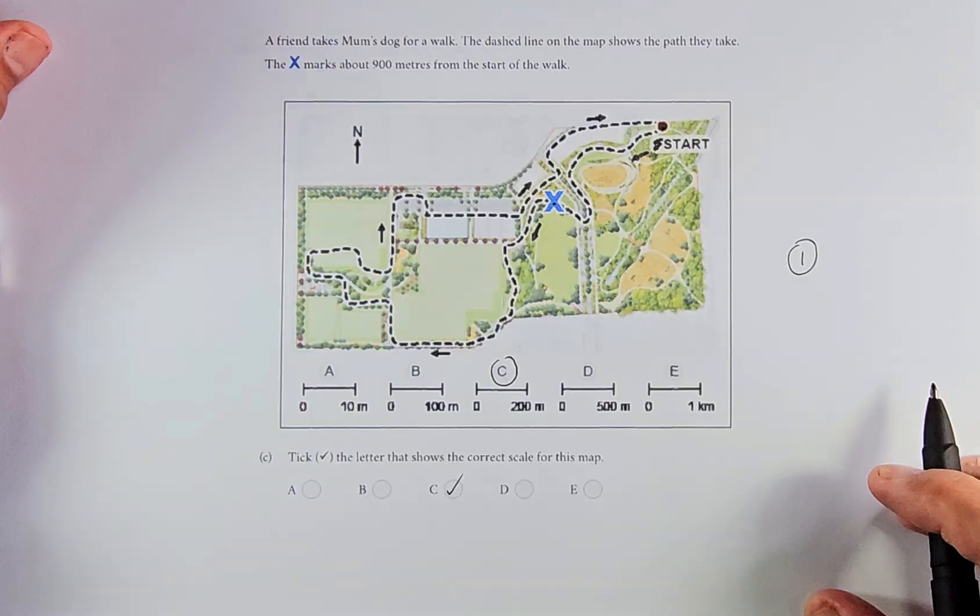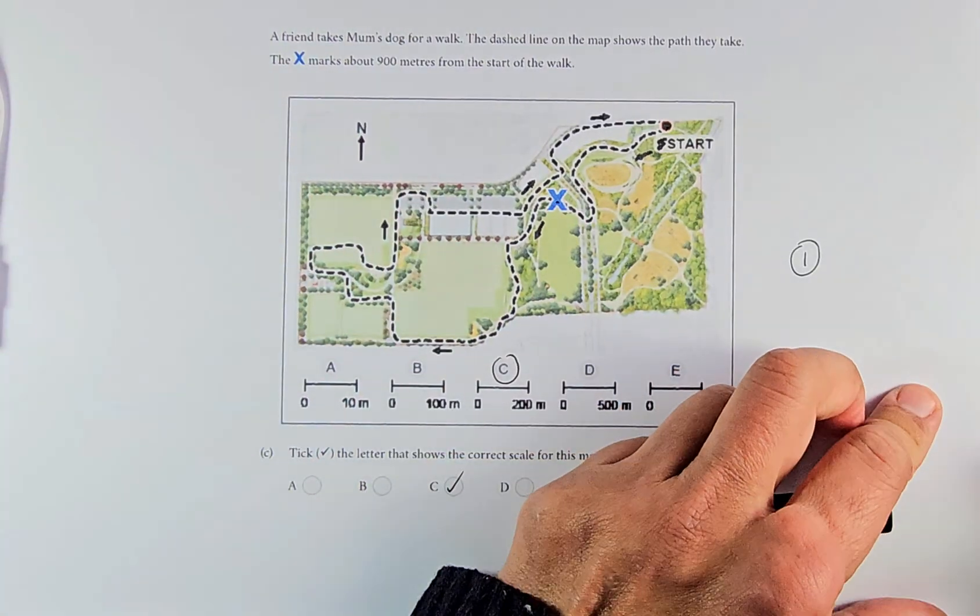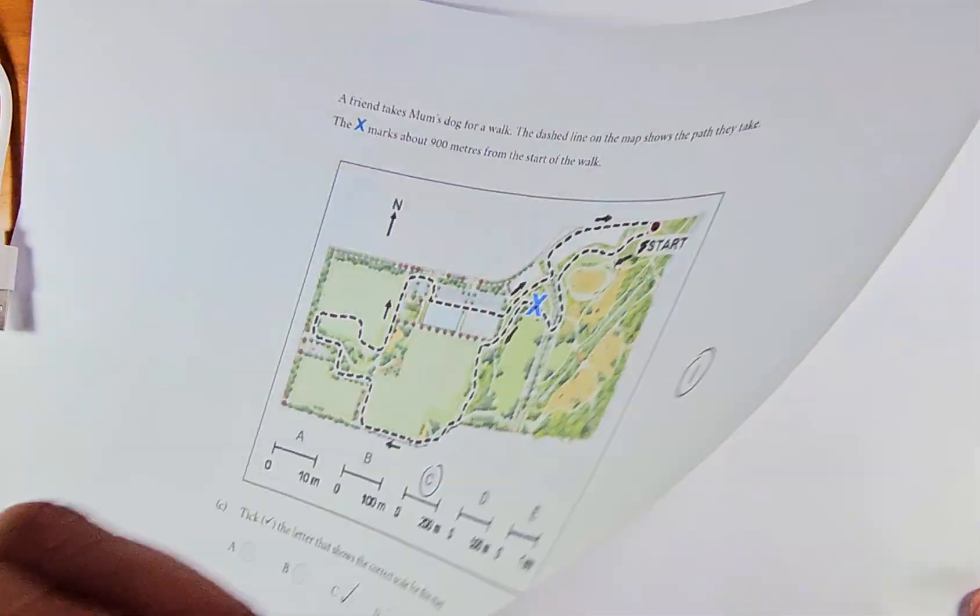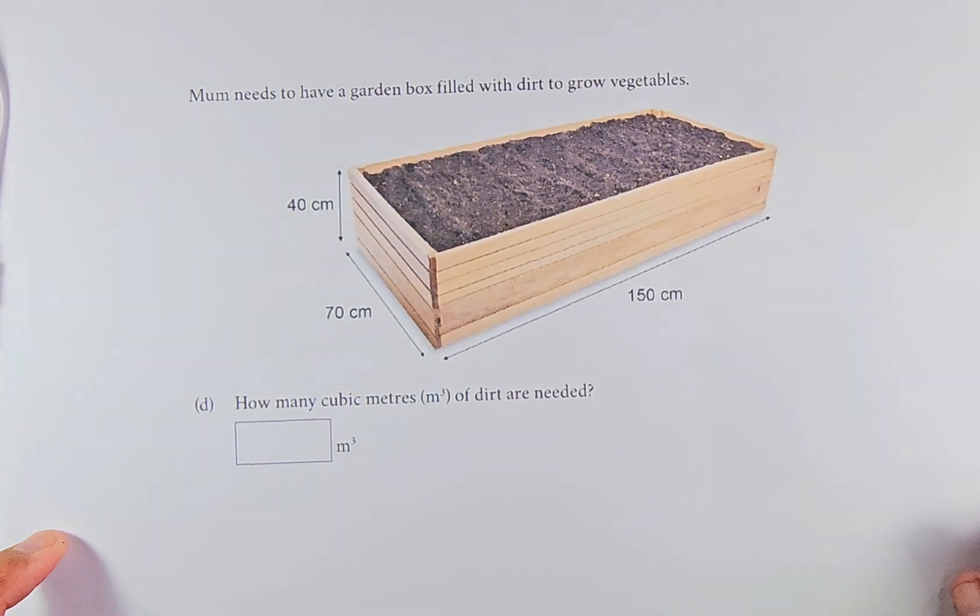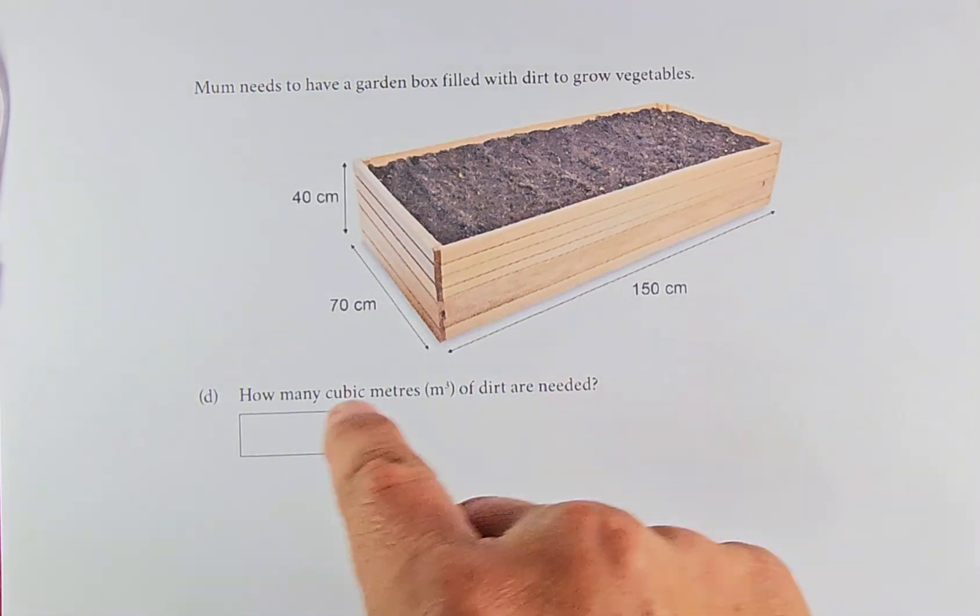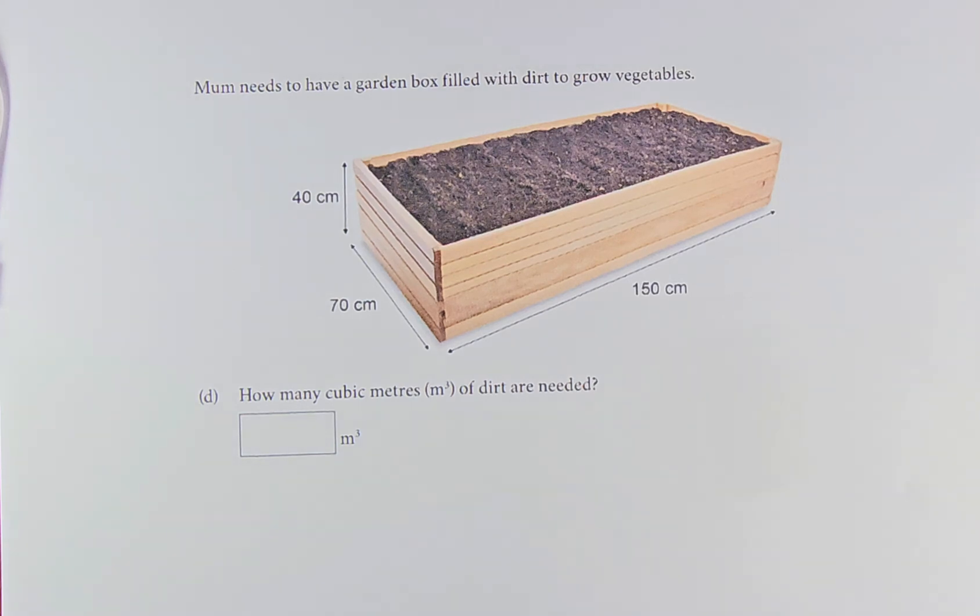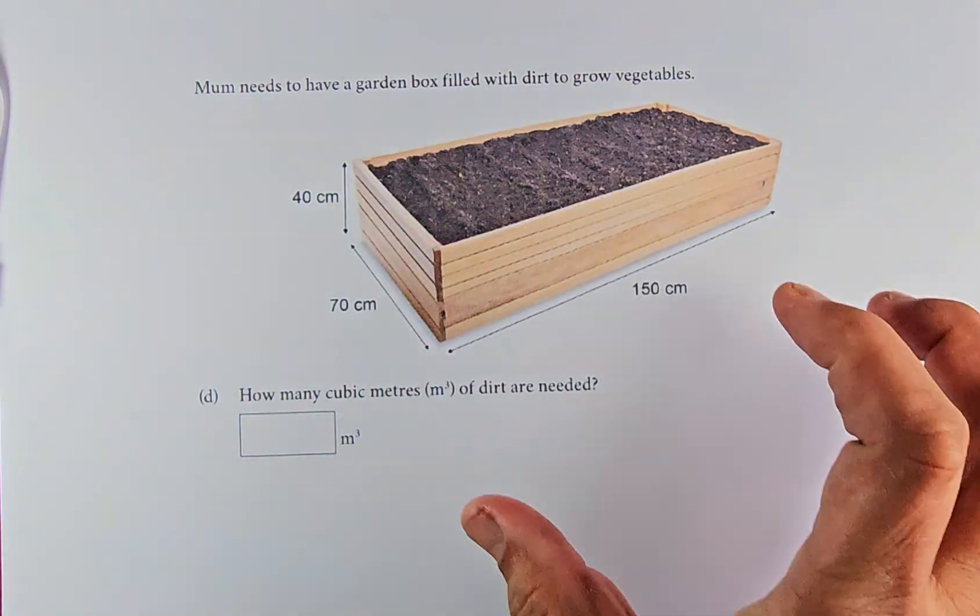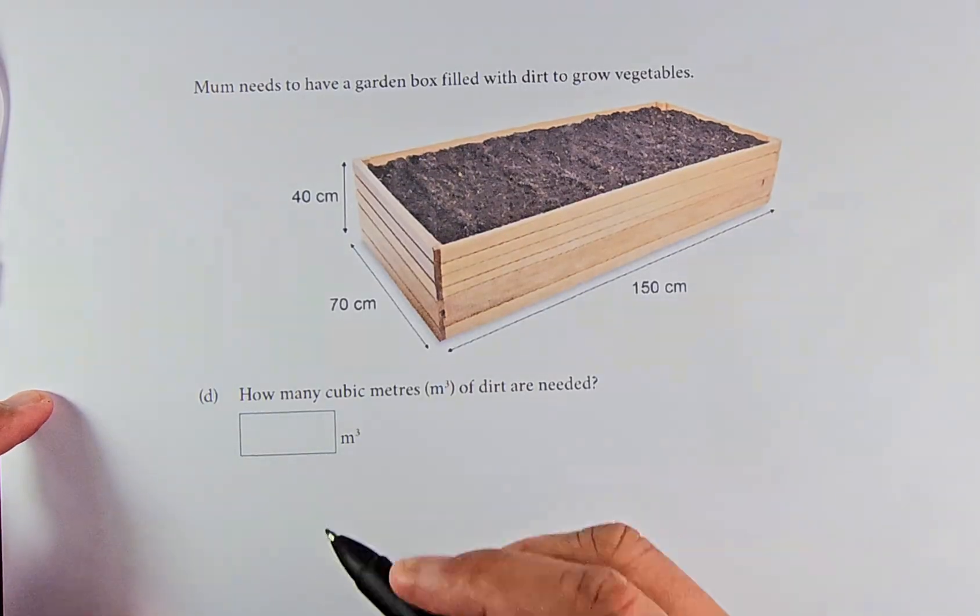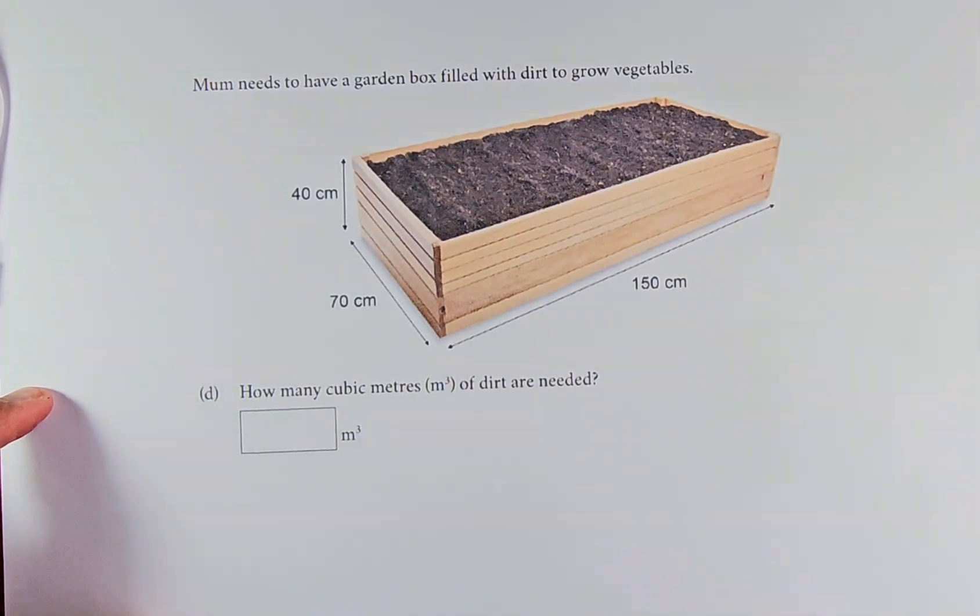Now we're going to do question 1d. Mom needs to have a garden box filled with dirt to grow vegetables. This is a garden bed - it's 40 cm high, 70 cm in width and 150 cm in length. How many cubic meters of dirt are needed? You're going to fill up to the brim. Because they want the answer in meters cubed, I would first convert everything to meters. So 40 cm is 0.4 meters, 70 cm is 0.7 meters and 150 cm is 1.5 meters.